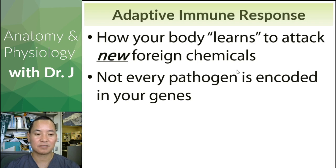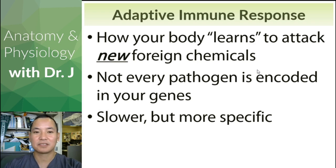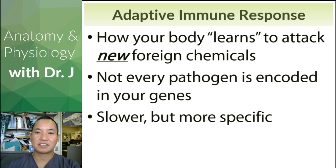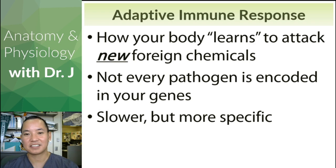We do cover a lot of those foreign things in general, but for more specific pathogens you need your adaptive immune response to cover that — slower but more specific. The adaptive immune response can't cover every single pathogen in existence because you won't encounter every single pathogen in the world. It's going to train your body to defend against new pathogens — specifically the ones that you actually encounter in your life.